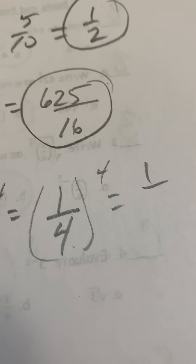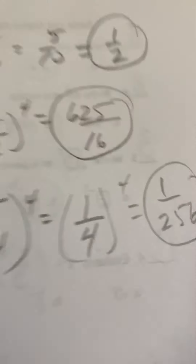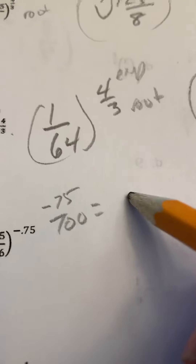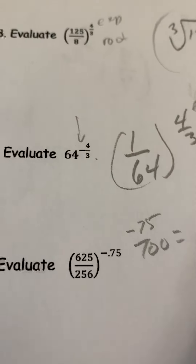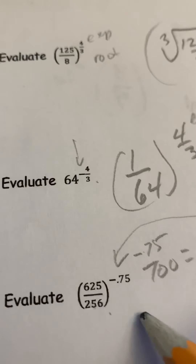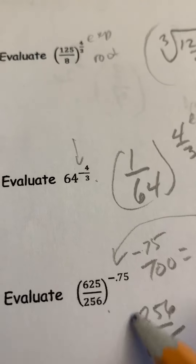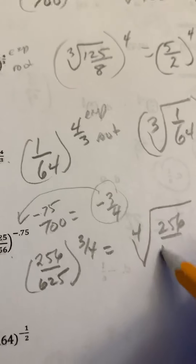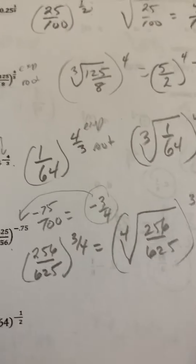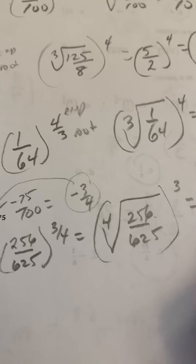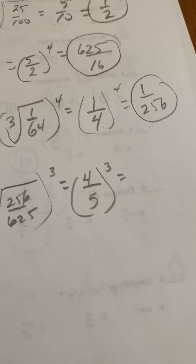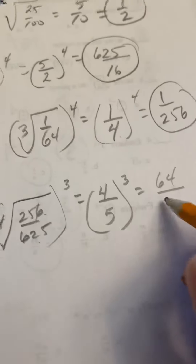Now we raise to the exponent 4. One to the exponent 4 stays 1, and 4 to the exponent 4 is 256. Then we have negative 75 over 100, which is negative three quarters as our new exponent. We write the reciprocal of the base: 256 over 625 to the three quarters, meaning we find the fourth root of 256 over 625 and then cube it. The fourth root of 256 is 4, and the fourth root of 625 is 5.